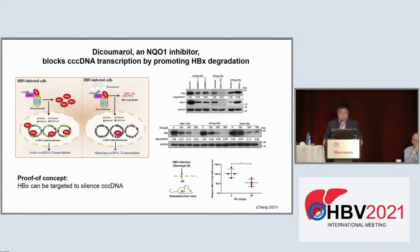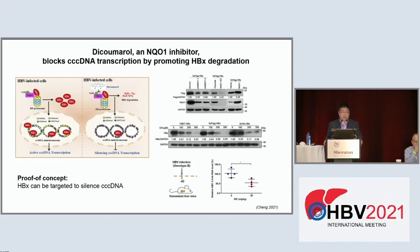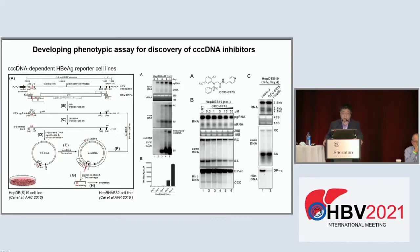A Chinese group used a compound called decomera targeting a host factor called NKO1, which prevents X protein degradation through the 20S proteasome. Inhibiting this process can also restore SRSF5/6 expression and silence cccDNA, demonstrated in a mouse model as well. CCC DNA inhibitors targeting the X protein should be a promising pathway to achieve cure.